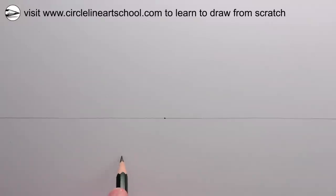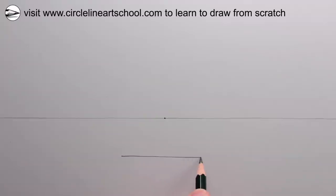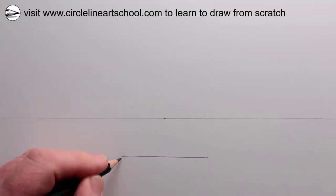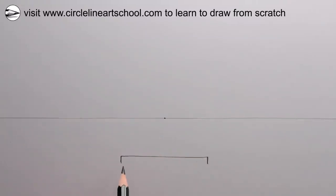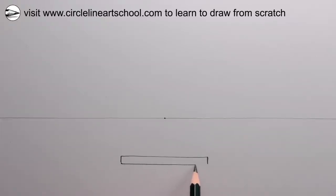Next we can draw a long thin rectangle, which will be the riser of the first step for the steps that we're going to draw using one point perspective. Place this rectangle halfway between the horizon line and the baseline of the paper that you're using.